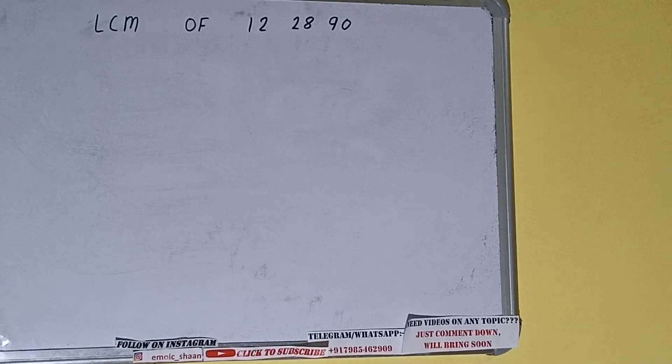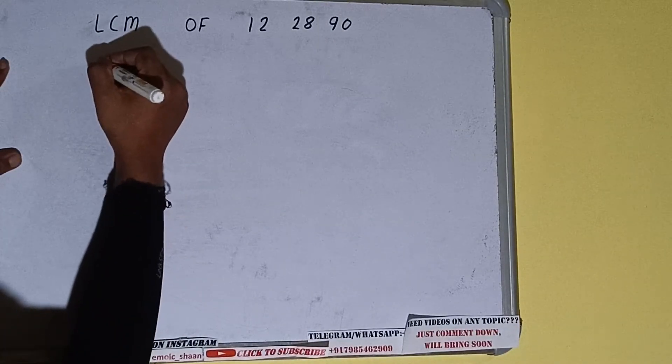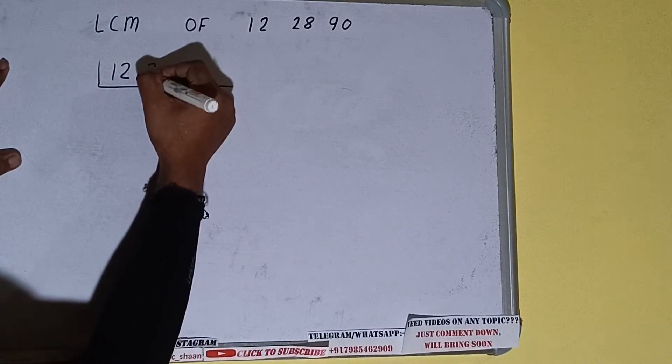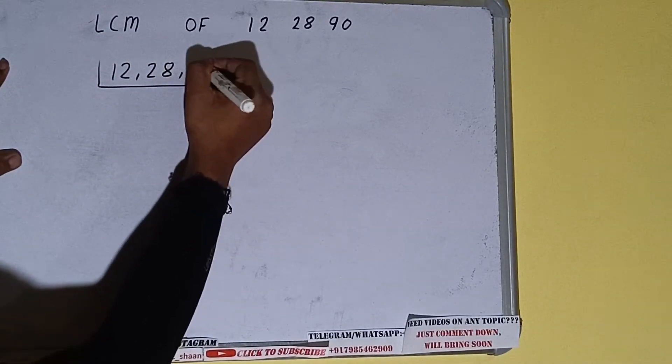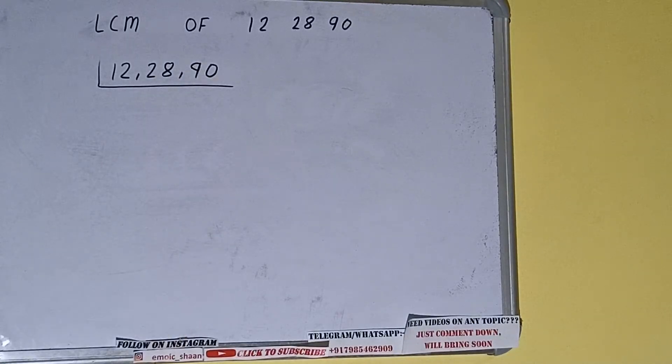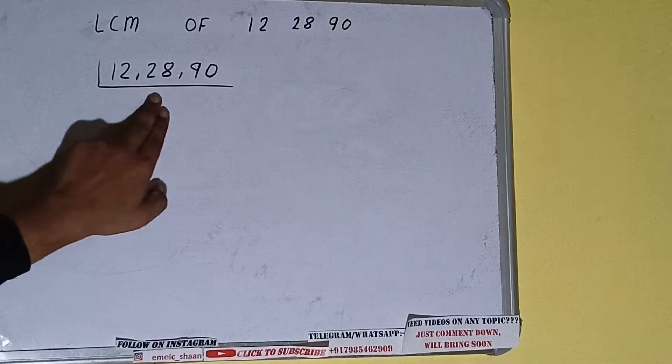Hello friends. In this video I'll be helping with the LCM of the numbers 12, 28, and 90. Let's start. First of all we need to write all three numbers like this: 12, 28, 90. The next thing we need to do is start with the lowest prime number, that is 2, and check if any of the numbers are divisible or not.